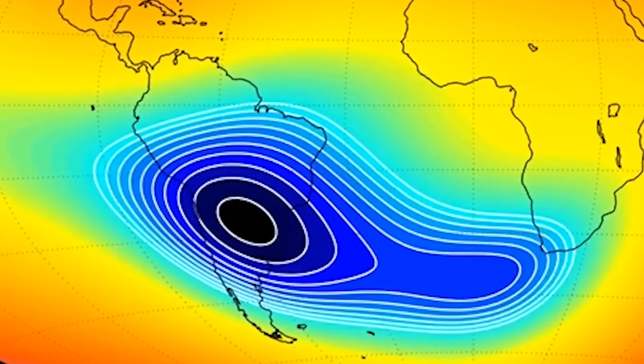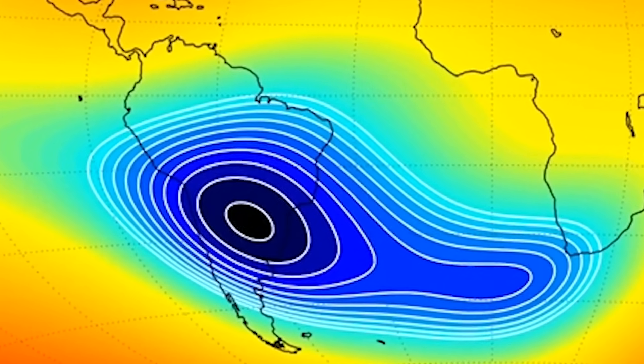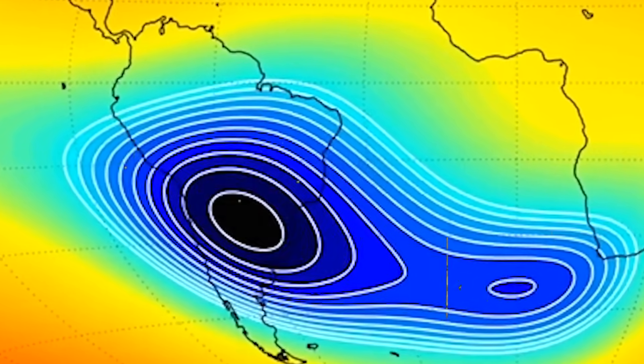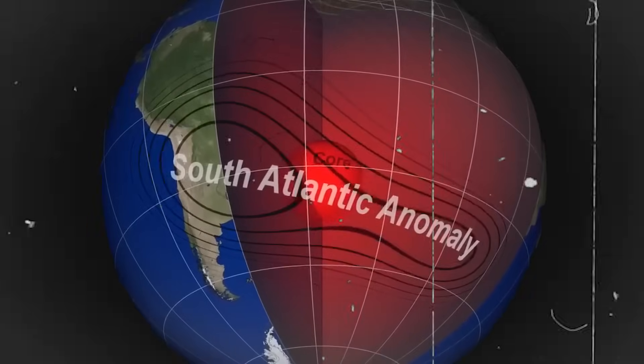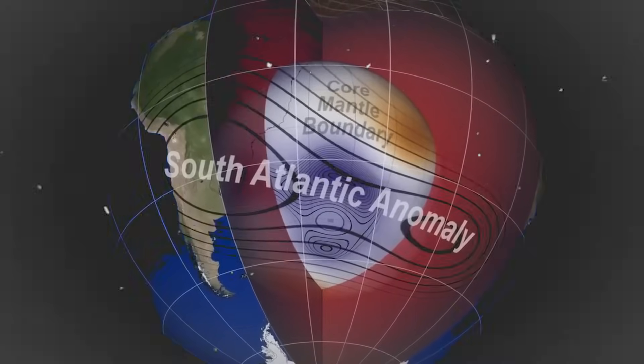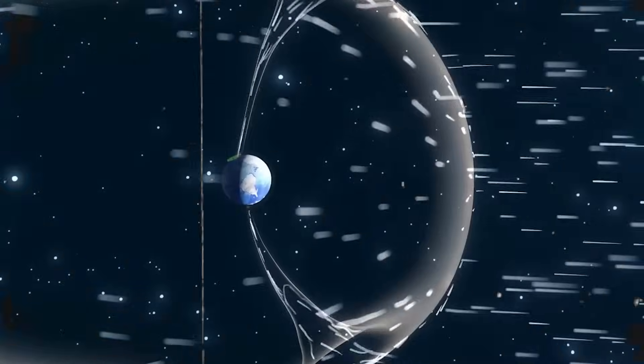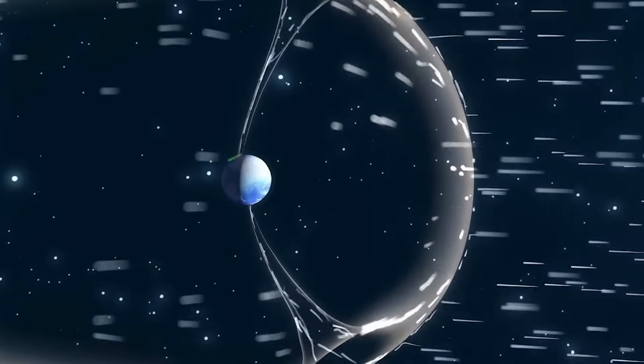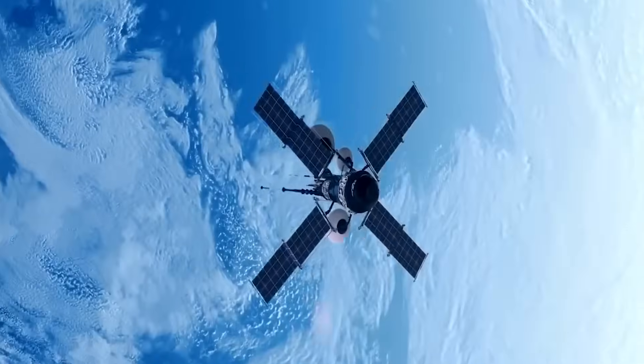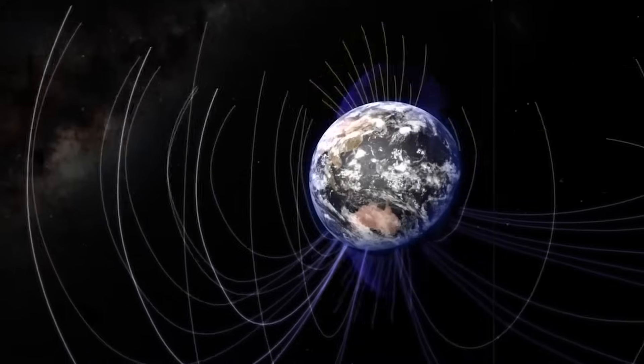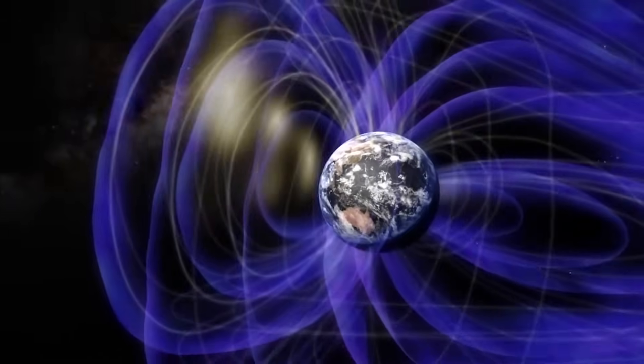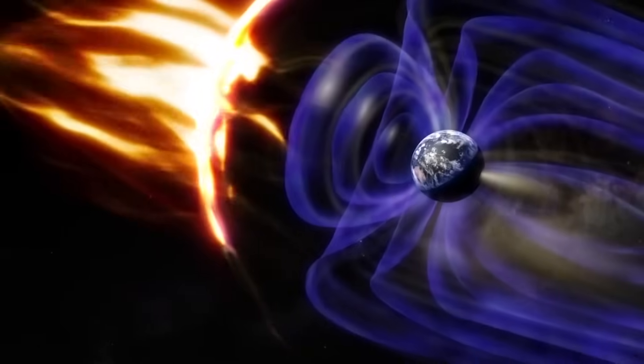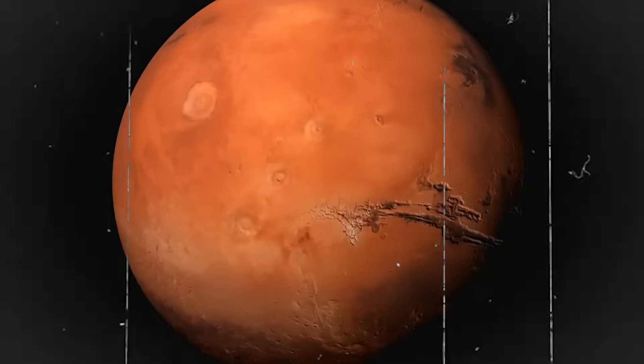The uncertainties and potential disruptions caused by a geomagnetic reversal highlight the need for robust, alternative navigation solutions. Innovations in navigation technology must focus on systems that are less dependent on the Earth's magnetic field. For example, advancements in inertial navigation systems, which use accelerometers and gyroscopes, offer a promising direction. These systems do not rely on external references, making them immune to magnetic field variations. Additionally,